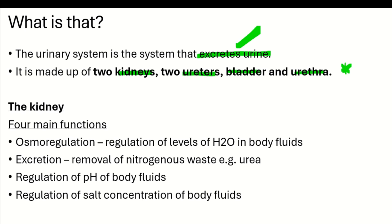These organs — the kidneys and so on — are the ones that form the urinary system. In this topic we'll focus more on the kidneys because the kidneys actually play a big role in the formation of urine. The kidney has four main functions of the urinary system.